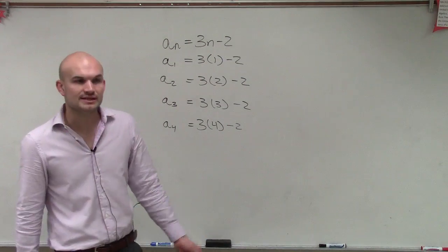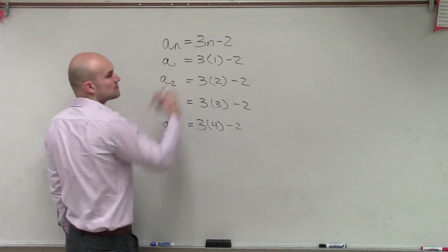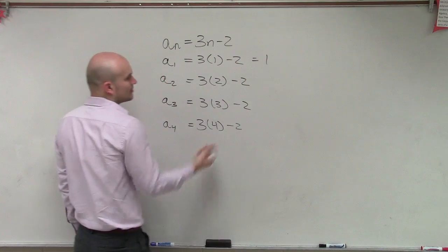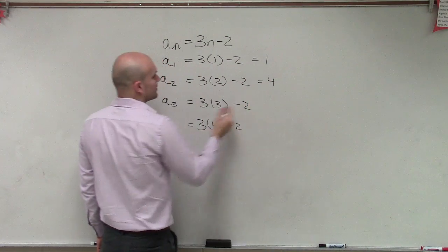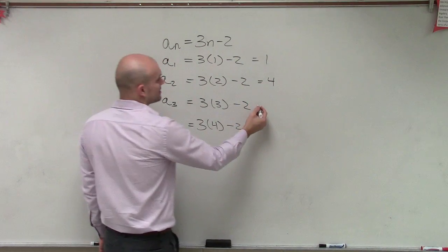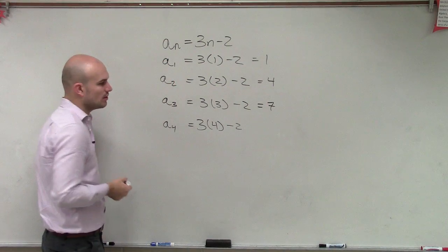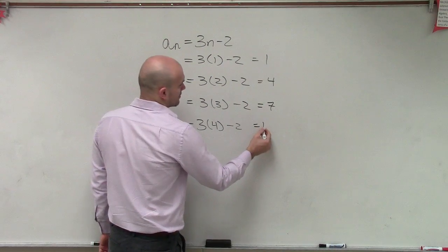Now we just simply need to evaluate. So 3 times 1 is 3, minus 2 equals 1. 3 times 2 is 6, minus 2 is 4. 3 times 3 is 9, minus 2 is 7. And 3 times 4 is 12, minus 2 is 10.